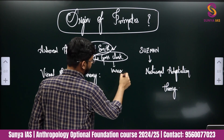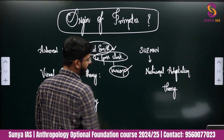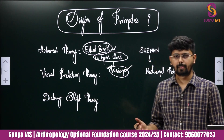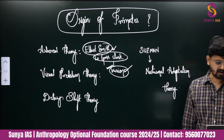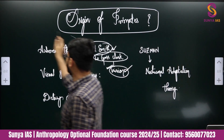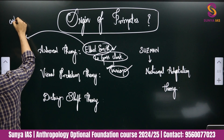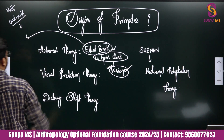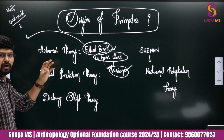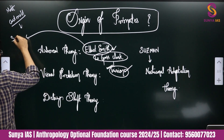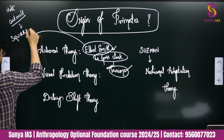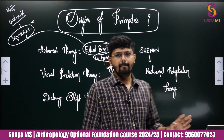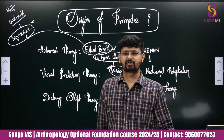From there, the features of primates started appearing — that is how primates came to appear. Next is the Visual Predation Theory by Cartmill. This is a criticism of the arboreal theory. Cartmill pointed out that the squirrel is also a mammal and also lives on trees, but it does not have a primate-like structure.